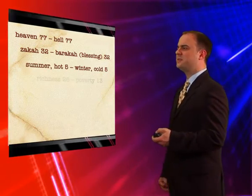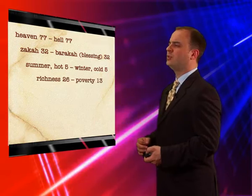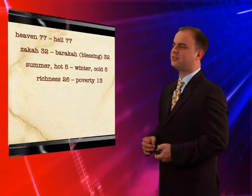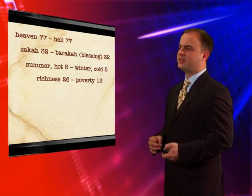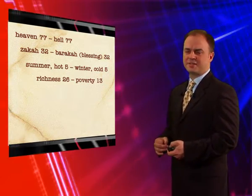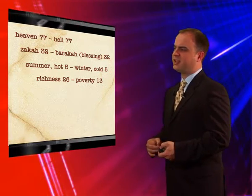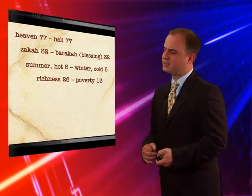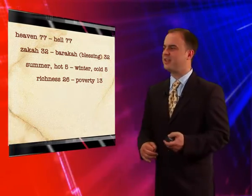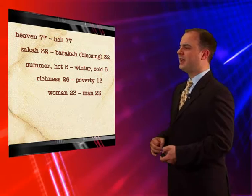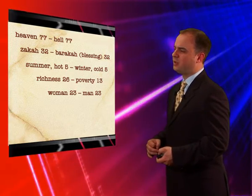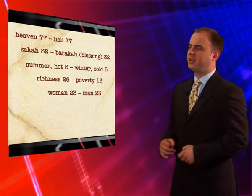'Richness' and 'poverty' are very interesting: 'richness' is repeated 26 times, whereas 'poverty' is repeated 13 times — exactly half of 26. And 'woman' and 'man' are repeated equally 23 times each.